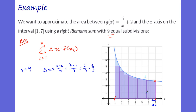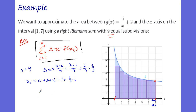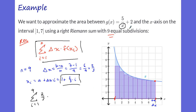Now let's figure out what x naught is: a plus delta x times i. So a is 1, plus delta x (which is 2/3) times i. Now we plug this into the function f(xi) = 5/(xi + 2), giving us the summation from i=1 to 9 of 2/3 times 5 over (1 + (2/3)i + 2).